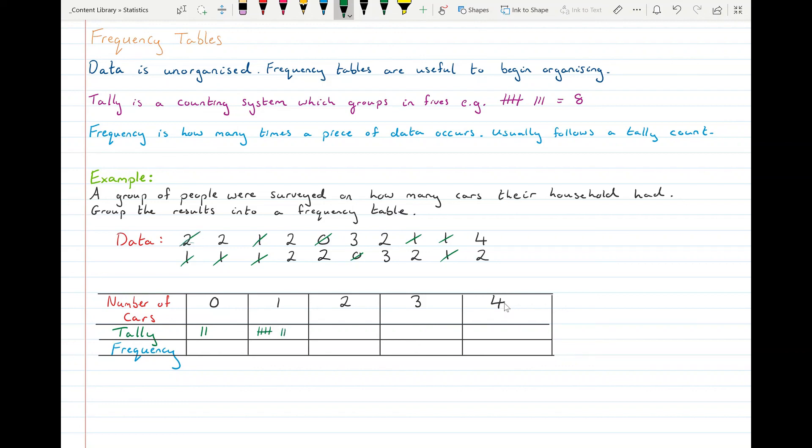How many people had two cars? Eight. So it's going to be one bundle of five and three extras. Three cars was just two and four cars was one. So that's my tally row. And then quite easy to fill in the frequency row. Zero cars was just two. One car was seven. Two cars was eight. Three cars was two. And four cars was one.